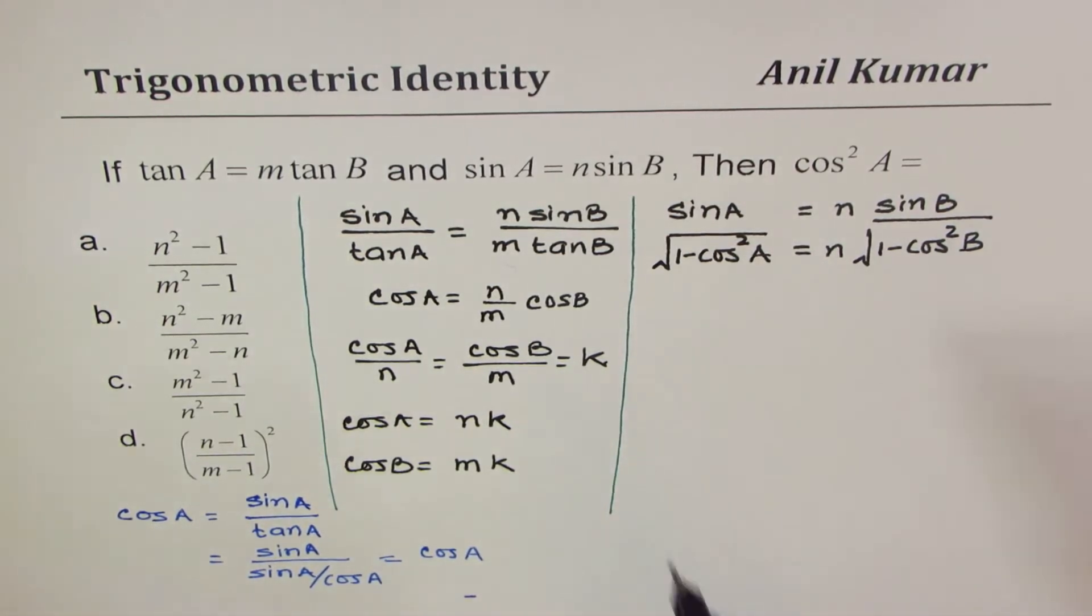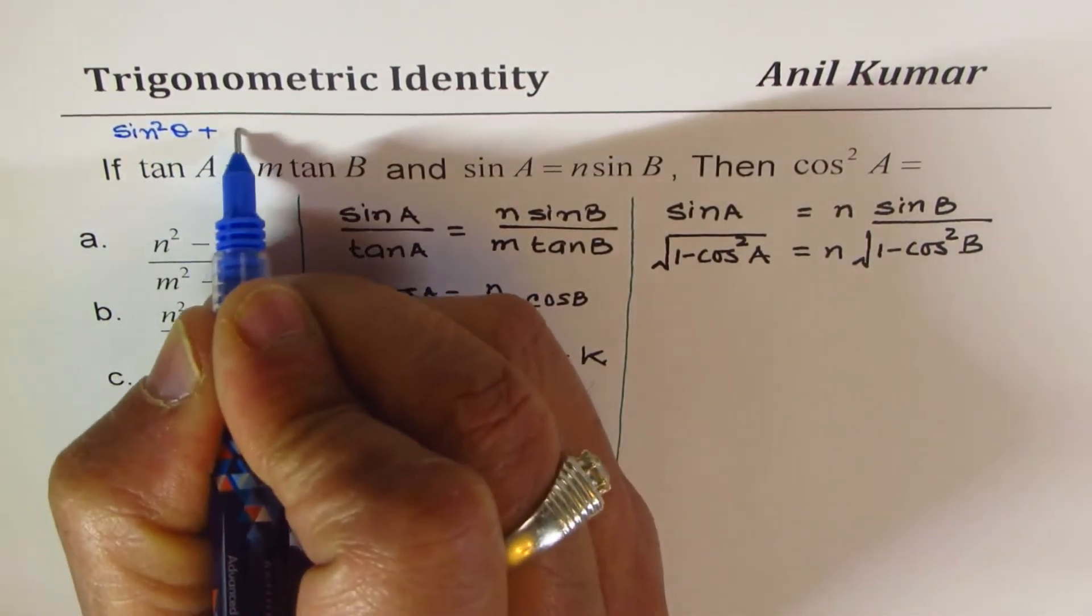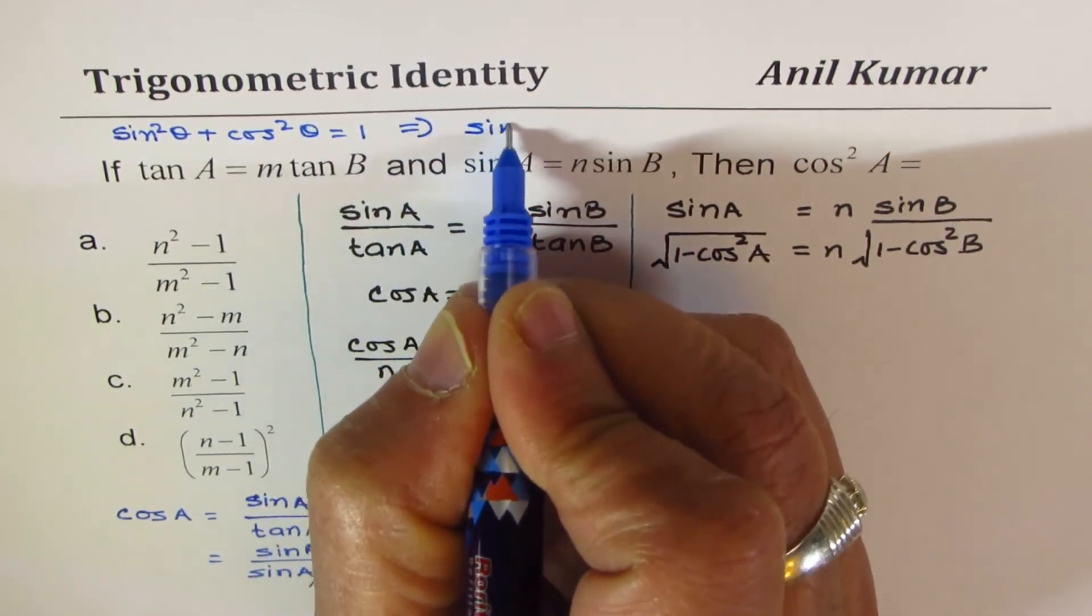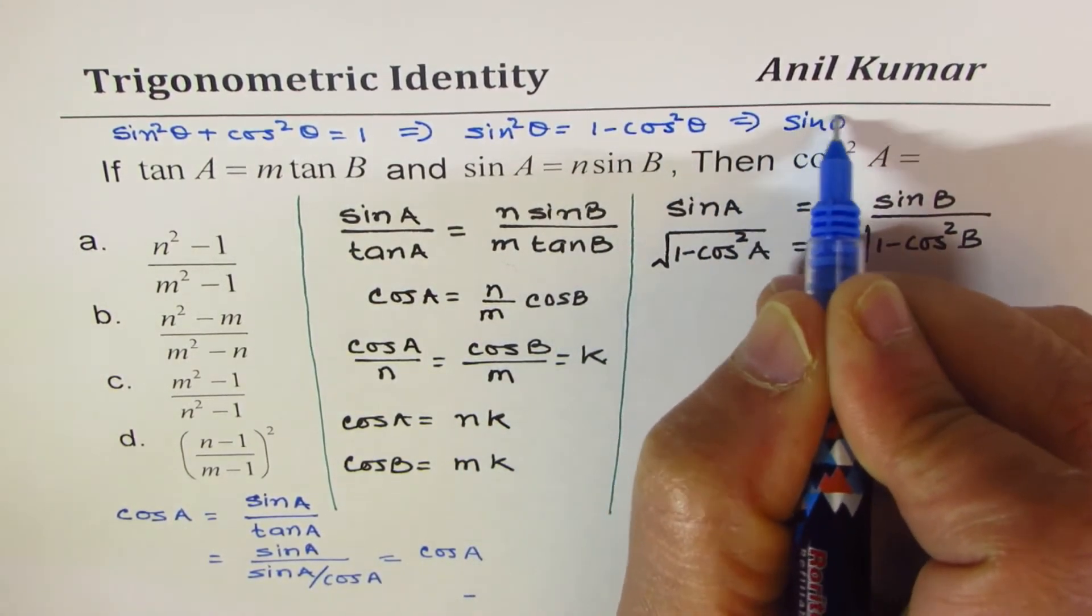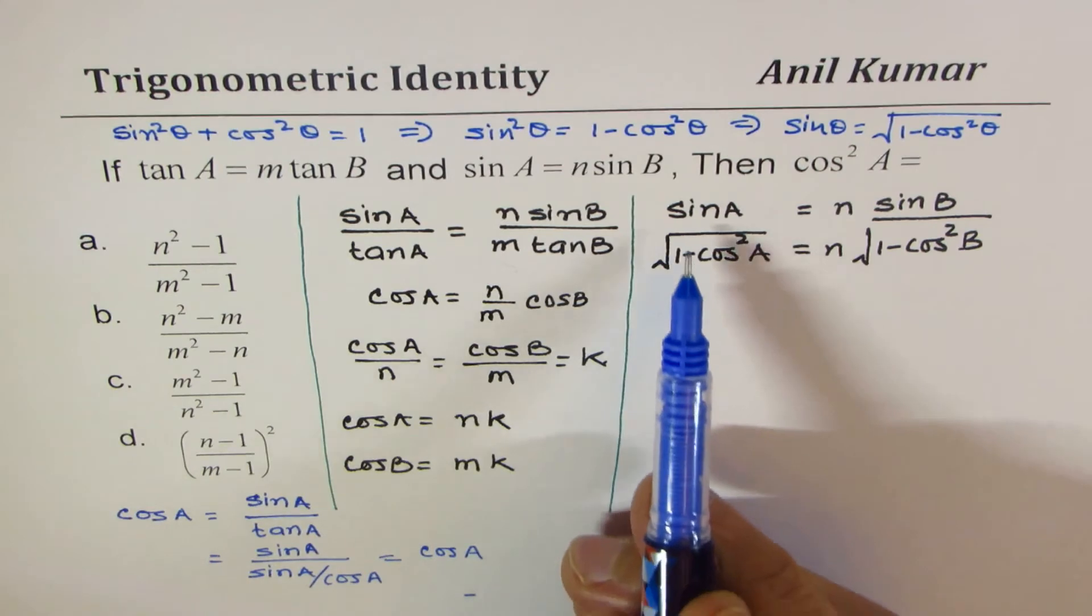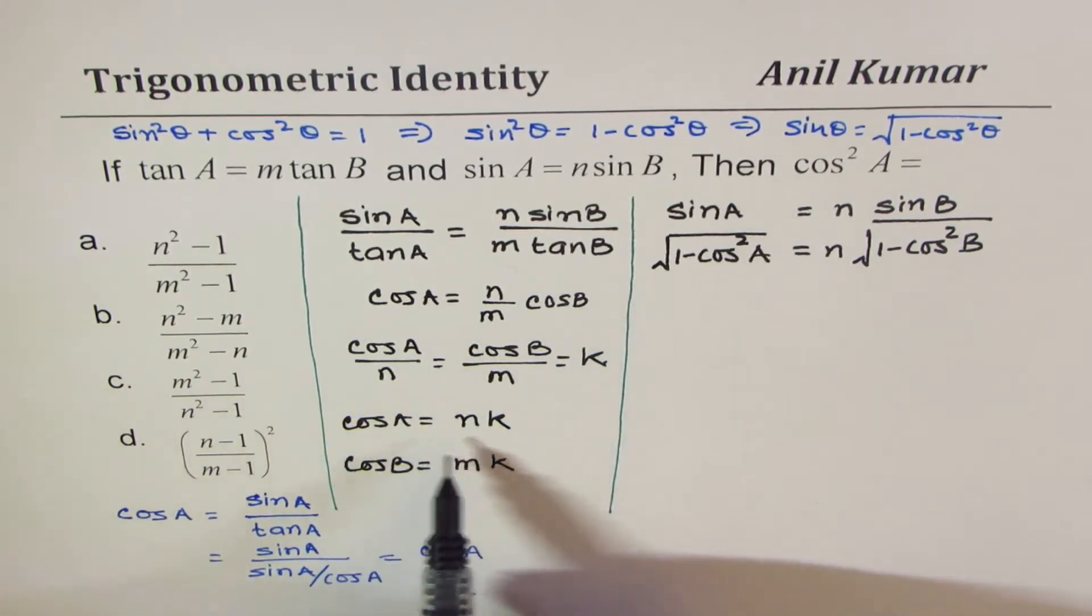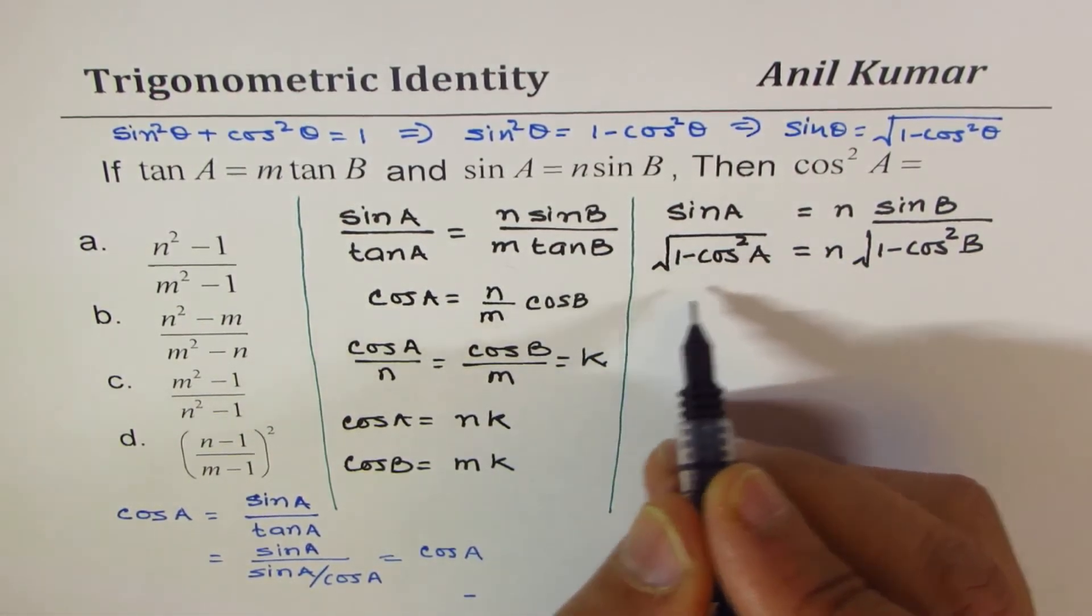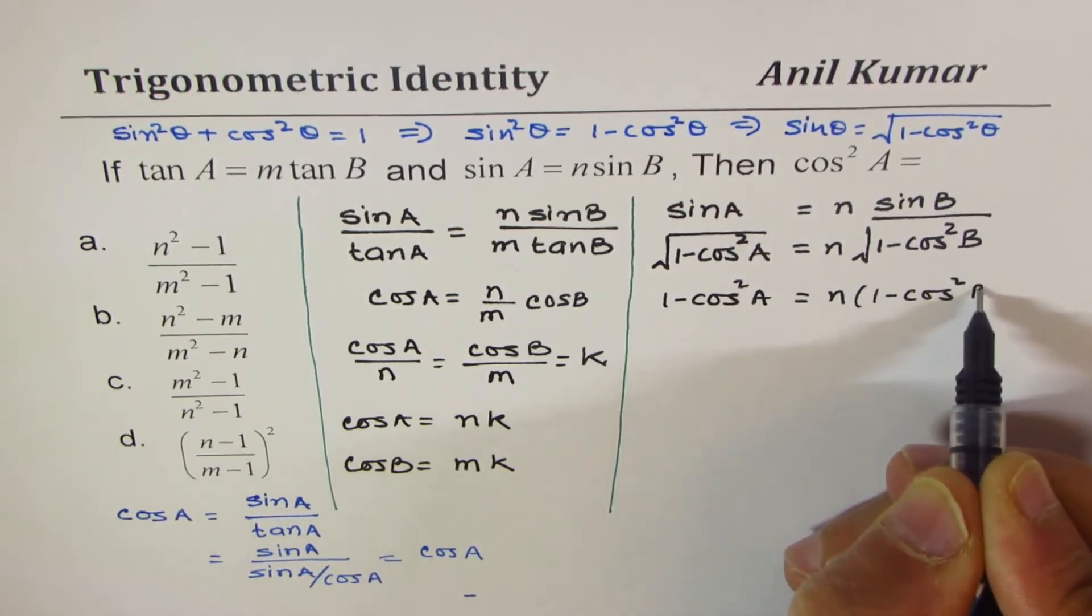n times square root of 1 minus cos square B. Since you know that sum of squares of sine and cosine, we know sin square theta plus cos square theta is 1. So we could write sin as, this implies that sin square theta equals 1 minus cos square theta. And that implies that sin theta equals square root of 1 minus cos square theta. Perfect. So I replaced sin A with 1 minus cos square A square root. Same thing I did for sin B. Now, cos A is nk. Let me square both sides.